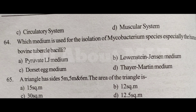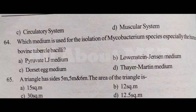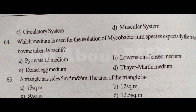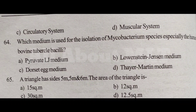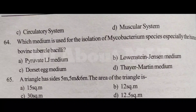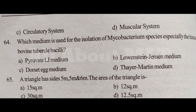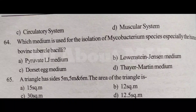Which medium is used for the isolation of mycobacterium species, especially the human and bovine tubercle bacilli? Option A Pyruvate LG medium, Option B Lowenstein Jensen's medium, Option C Dorset egg medium, Option D Thayer Martin medium. Answer is Option B Lowenstein Jensen's medium.